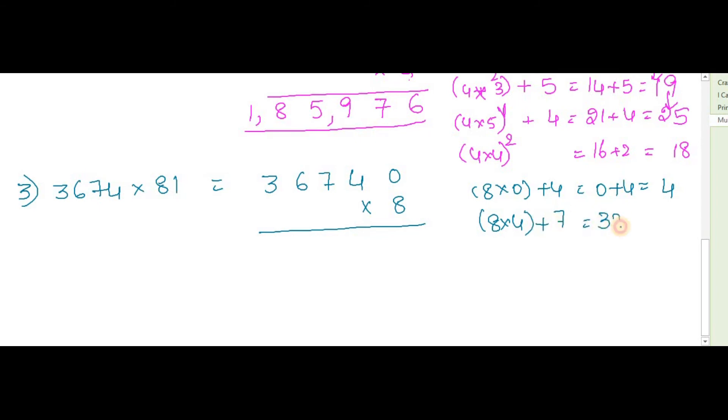8 into 4 plus 7. 8 fours are 32 plus 7 equals 39. So 3 is going to become your carry here. 8 into 7, carry 3 plus 6. 8 sevens are 56 plus carry 3 equals 59, plus 6 is 65. So again you have a carry here, 6.